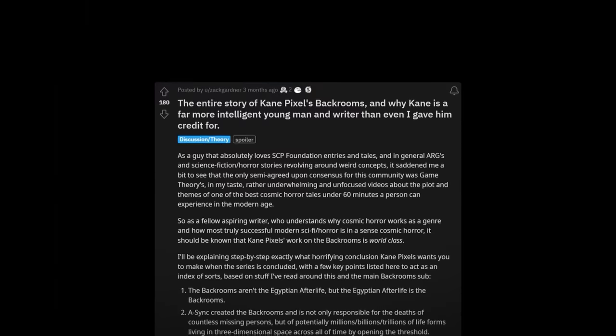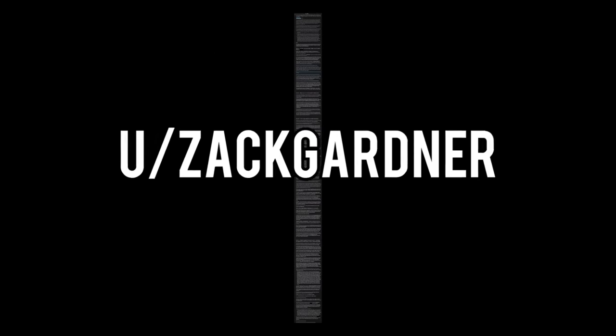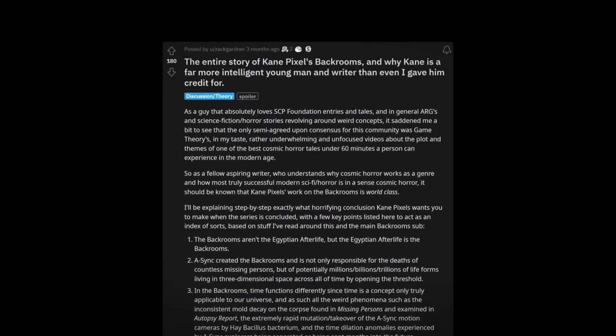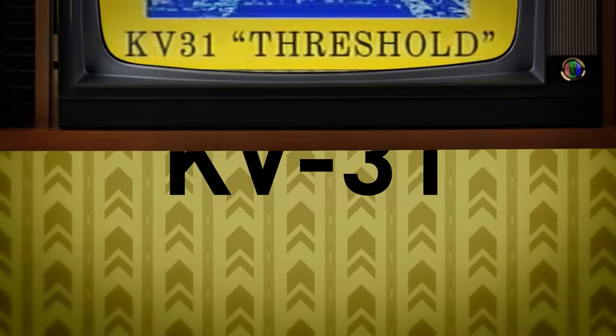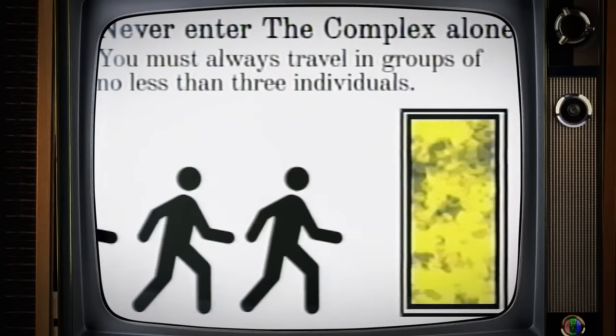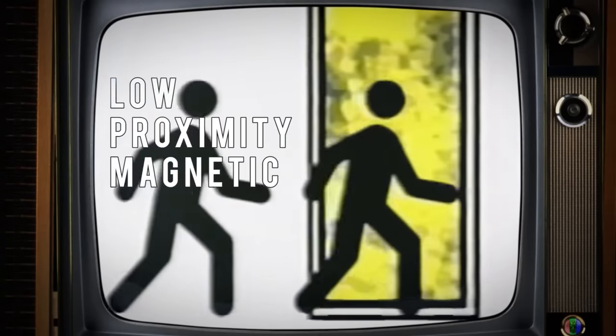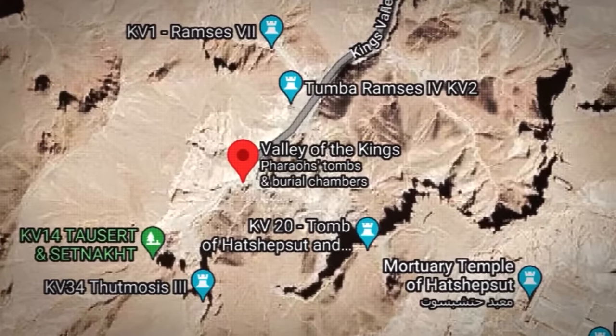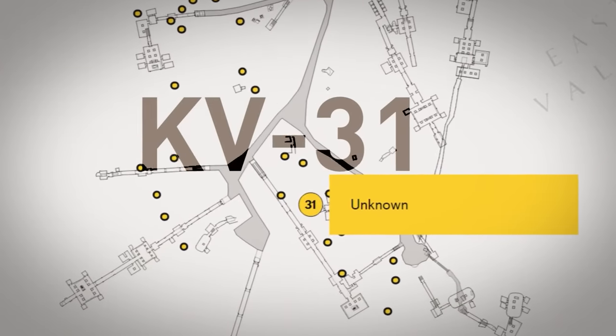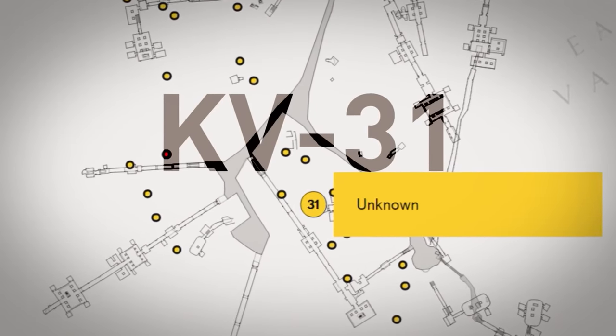The most in-depth example is this massive six-page analysis from Zach Gardner on the entire Backrooms storyline. This thread is long, so I'm just going to touch on the highlights here. First, and most importantly, the name: KV31. In the Backrooms, KV31 is the project designation that Async gives to their Low Proximity Magnetic Distortion System — their portal into the Backrooms. KV31 might just seem like random letters and numbers, but it actually shares its name with a real-world location: a tomb in Egypt's Valley of the Kings, also named KV31.